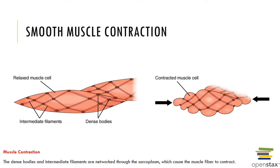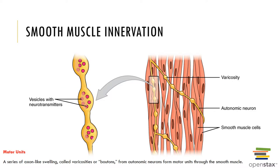This slide shows the muscle contractions that occur within the smooth muscle. The dense bodies and intermediate filaments are networked through the sarcoplasm, which cause the muscle fiber to contract. Smooth muscle cells are relatively long and slender, ranging from 5 to 10 micrometers in diameter and 30 to 200 micrometers in length. Although actin and myosin filaments are utilized in the contraction of smooth muscle, they are arranged differently from that of skeletal and cardiac muscle. There are no sarcomeres or myofibrils, so there are no striations in smooth muscle.